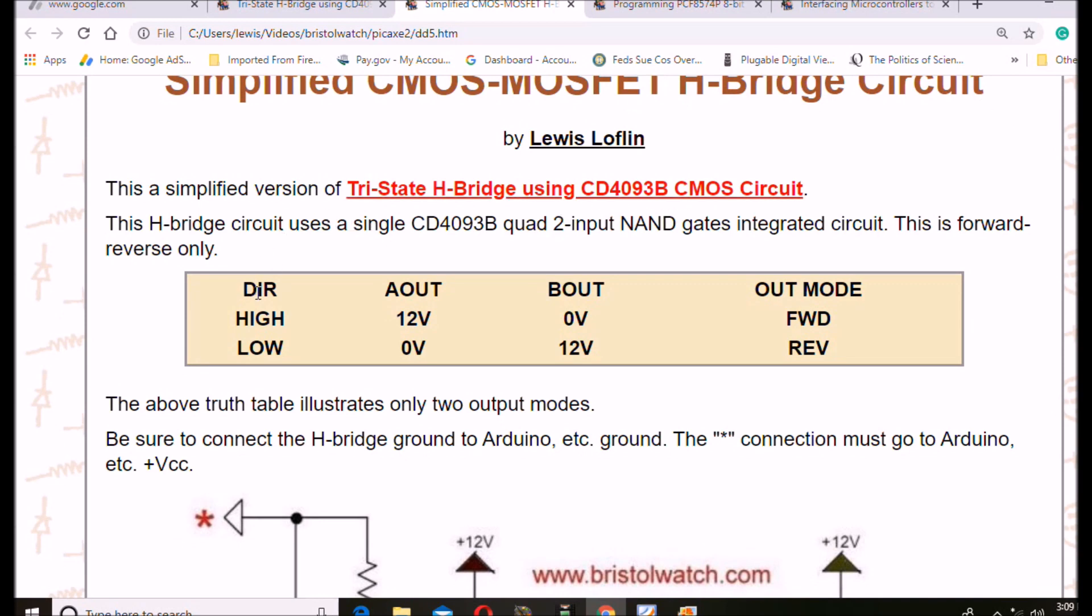Here's your truth table as your direction pin. If it's a high, A out will be 12, B out will be 0. It'll go in the forward mode. A low in is going to give me a 0 out on A out, 12 volts on B out and it's going to be in reverse.